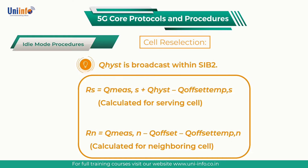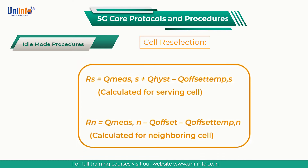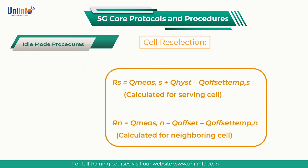Offsets which are excluded from the SIB are assumed to have a value of 0 dB. Cell-specific offsets for intra-frequency cell reselection should be applied with care because they can lead to a UE camping on a cell which is not the normal best server.